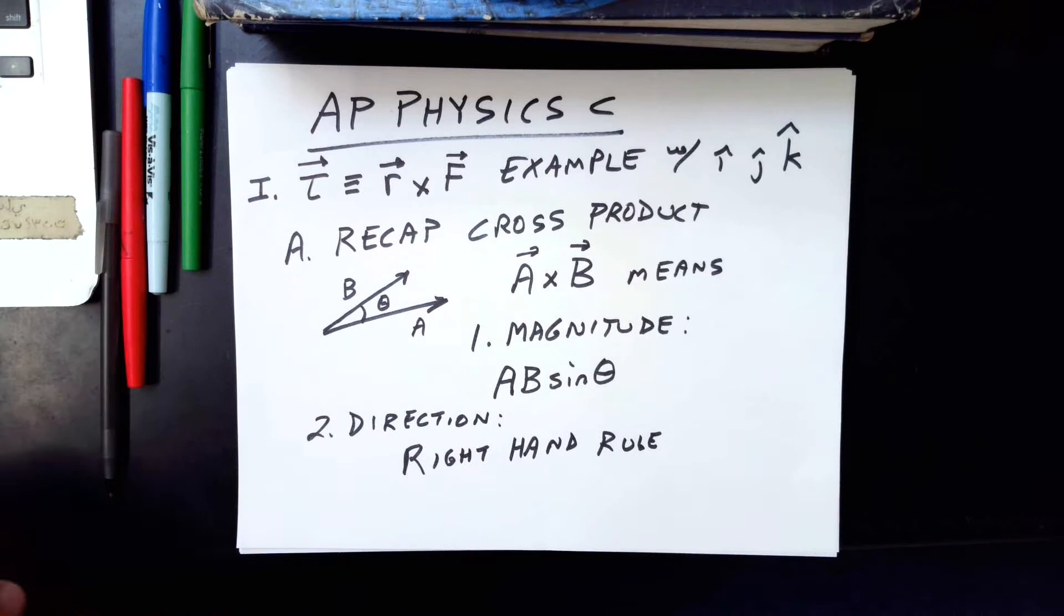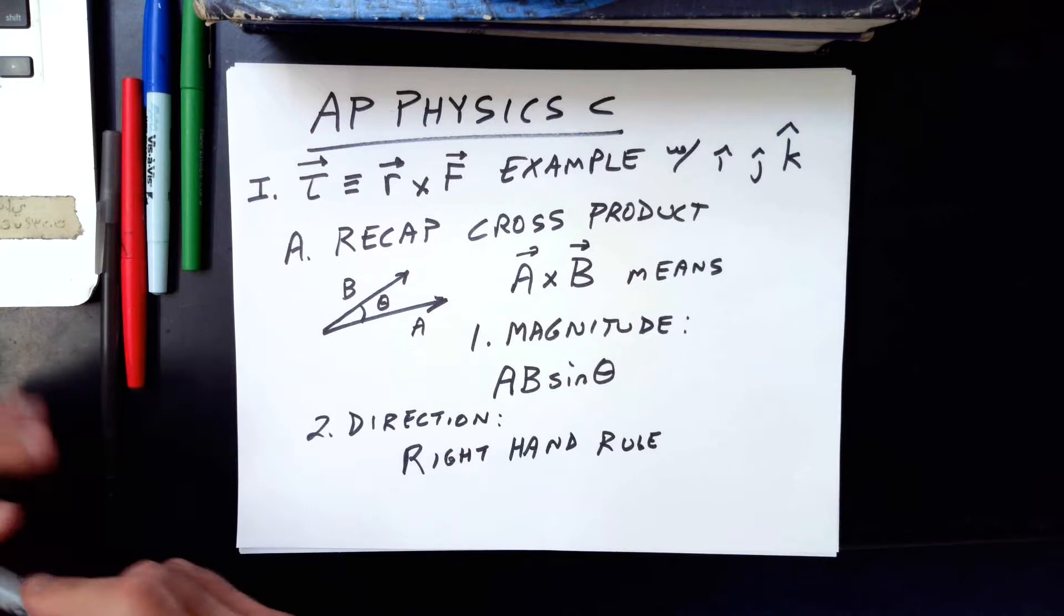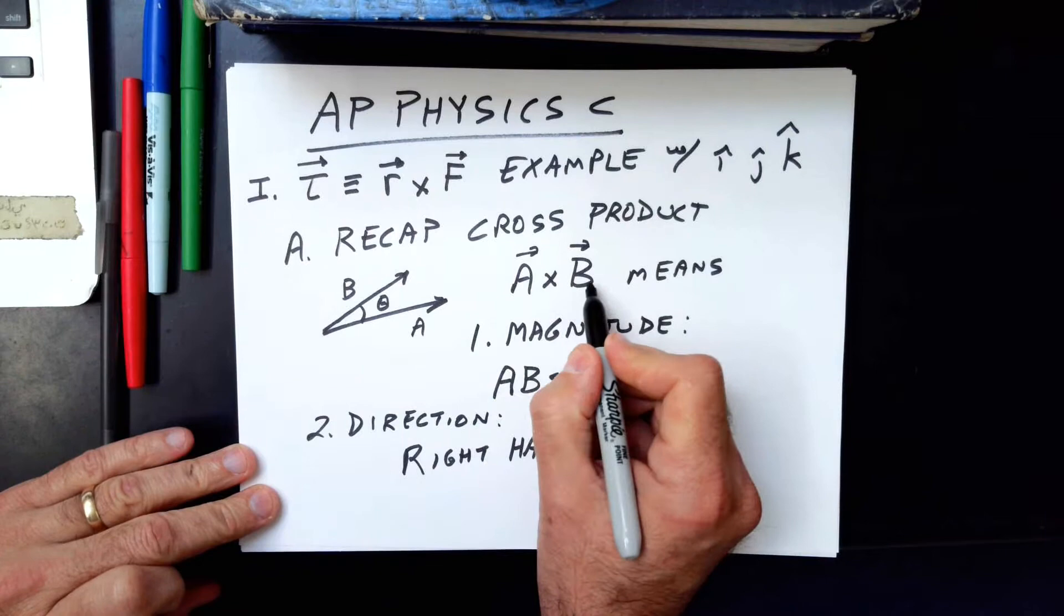If we're going to use the cross-product, we probably want to do a quick recap, but for a full treatment, you should look in your earlier notes. So that's how you write cross-product, and here's how you say it: A cross B. Now what does it mean?